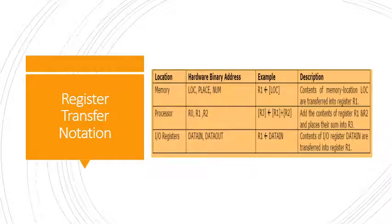That's all with the memory operation. Let us now discuss register transfer notations. Register transfer notations are used to describe the transfer of information from one location in the computer to another. The possible locations are memory locations, processor registers, and registers in the IO subsystem. To identify a location, symbol names standing for its hardware binary address are given.